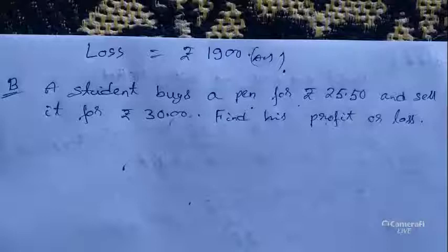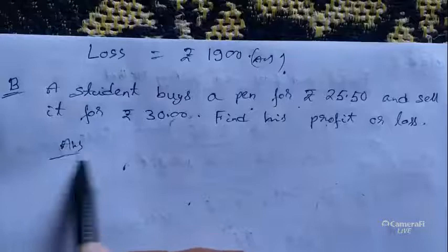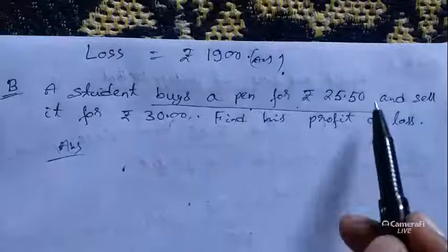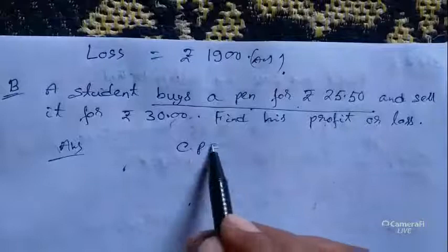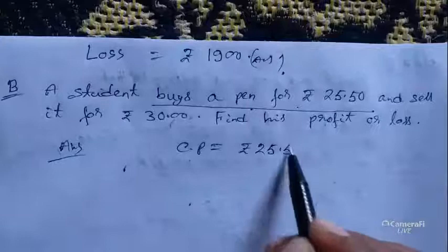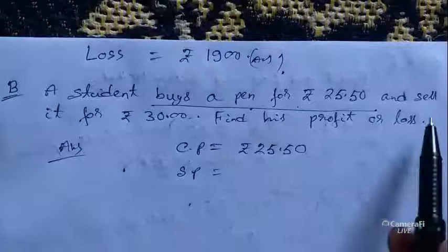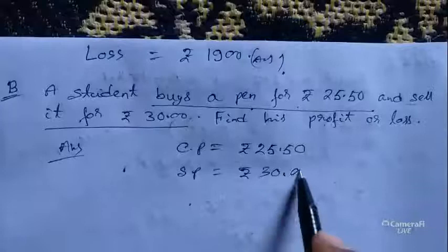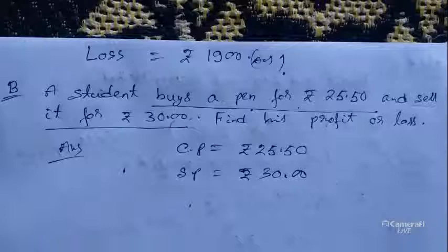Here it is given that the student buys a pen for rupees 25.50 — so this is the cost price. CP equals rupees 25.50. And selling price: the student sells it for rupees 30.00, so SP equals rupees 30.00. Now check which one is larger: SP is greater than CP, so the case is for profit.